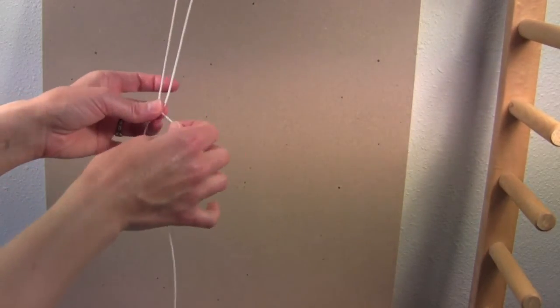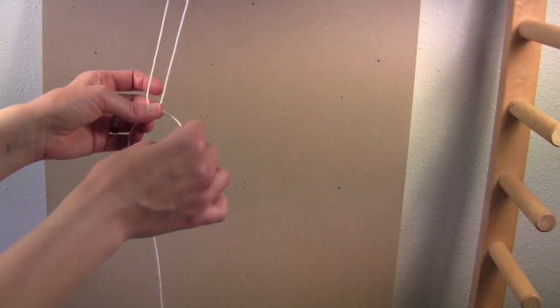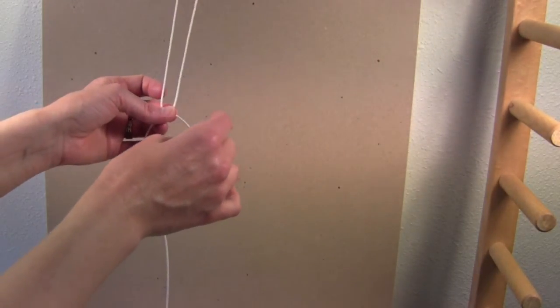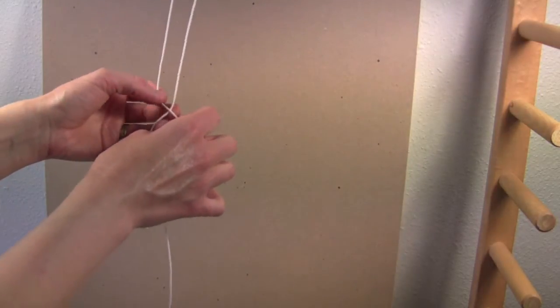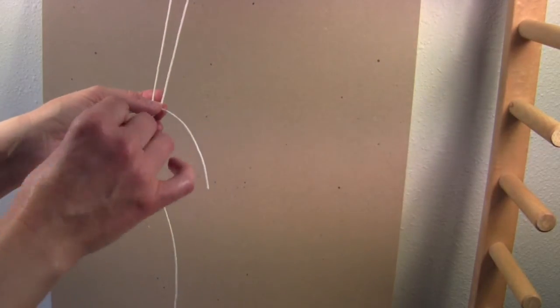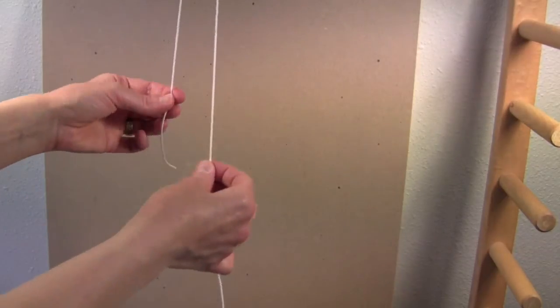This is also a great knot when you're warping the Murex, that final knot that goes around the warping bar. You want that to be adjustable so you can tighten that last warp. This is the knot for you.